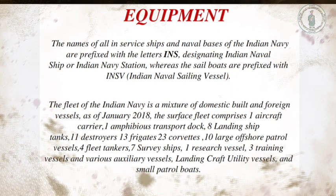All ships in service and naval bases of the Indian Navy are prefixed with 'INS' meaning Indian Naval Ship or Indian Navy Station, while sailboats are prefixed with 'INSV' meaning Indian Naval Sailing Vessel. As of January 2018, the fleet consists of one aircraft carrier, one amphibious transport dock, eight landing ship tanks, 11 destroyers, 13 frigates, 23 corvettes, 10 large offshore patrol vessels, four fleet tankers, seven survey ships, one research vessel, three training vessels, various auxiliary vessels and small patrol boats.